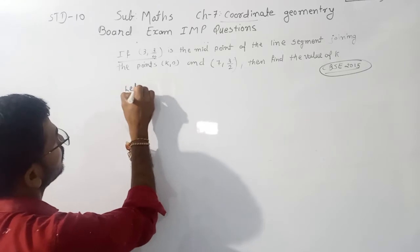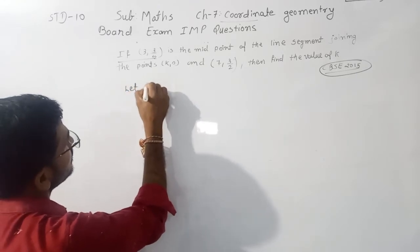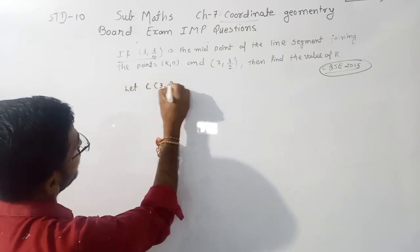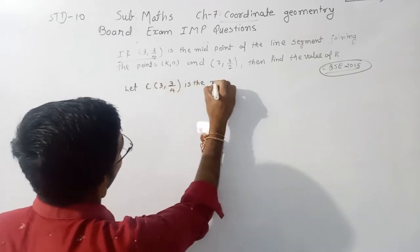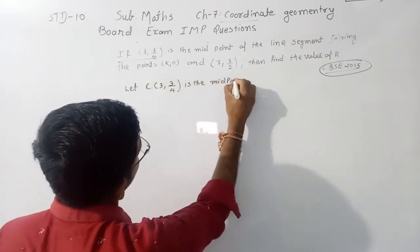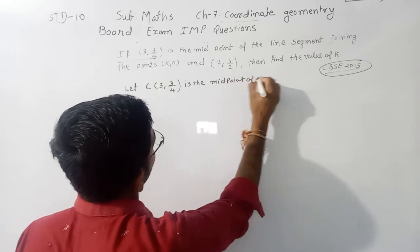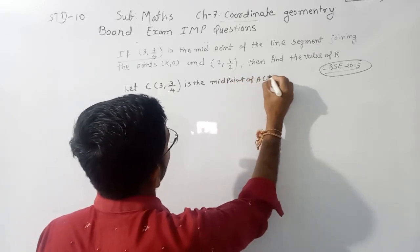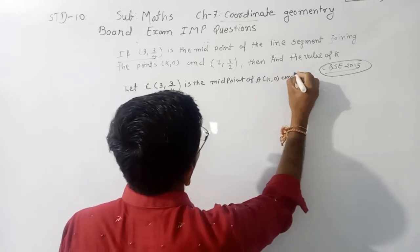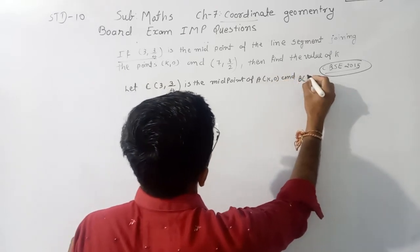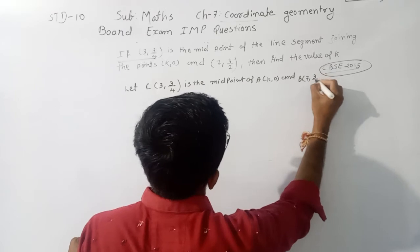Let C(3, 3/4) is the midpoint of A(K,0) and B(7, 3/2).